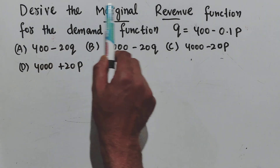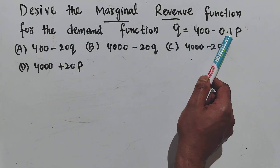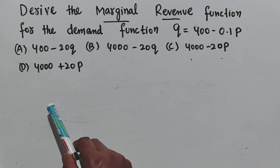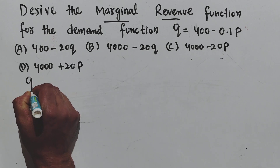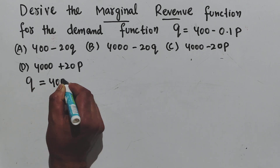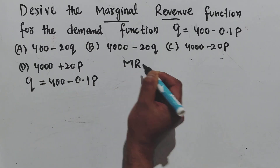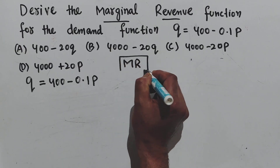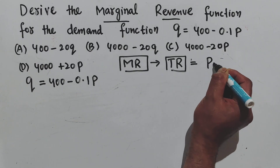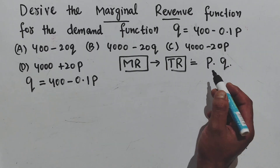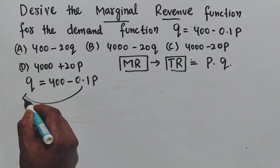The first question asks us to derive the marginal revenue function for the demand function Q = 400 - 0.1P, where P is the price and Q is the quantity. To find marginal revenue, we first need to find total revenue, and we know that total revenue equals price multiplied by output.